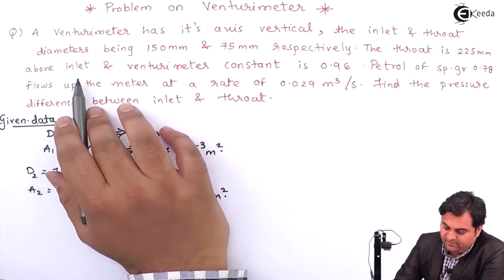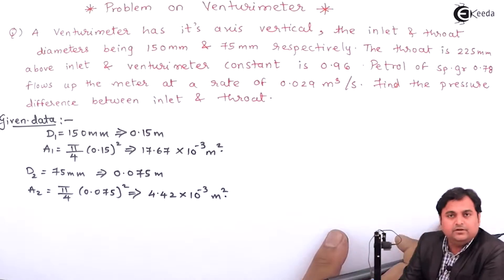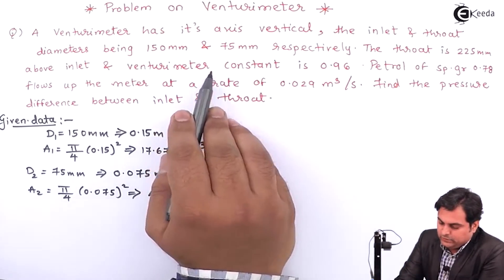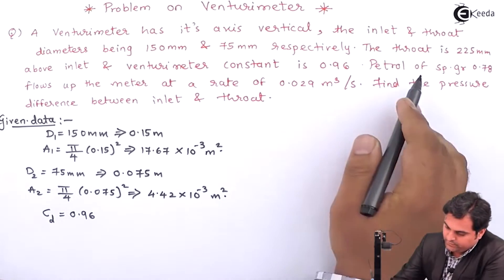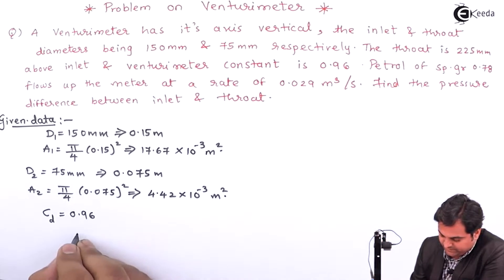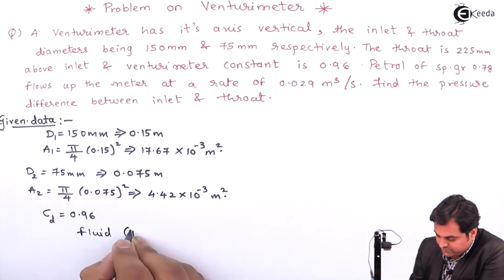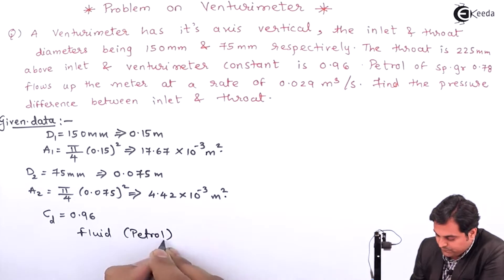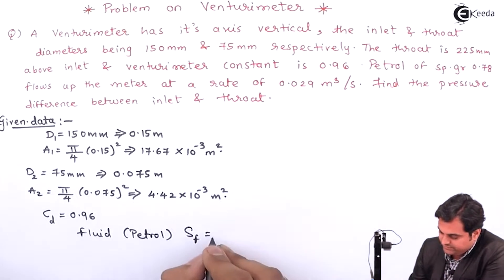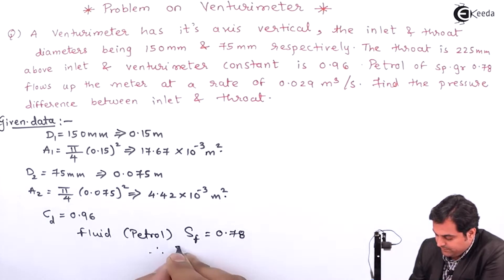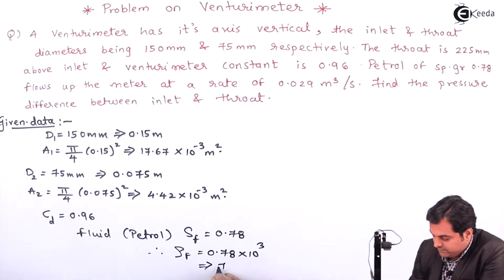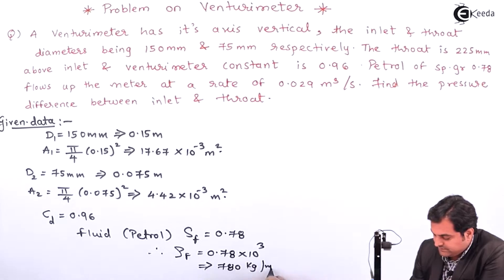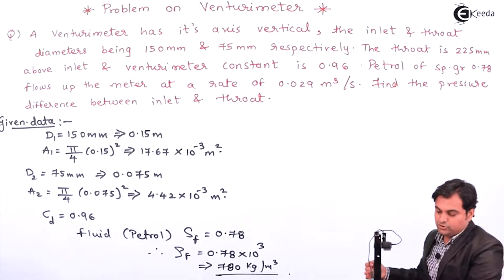The throat is 225mm above the inlet, that I'll explain on the diagram of the venturimeter. Next, venturimeter constant is 0.96, that is called coefficient of discharge CD. Petrol of specific gravity, so the fluid which is flowing is petrol, specific gravity is 0.78, so its density will be multiplied by 1000, that will give me 780 kg per meter cube as the density of petrol. Next, flows up the meter so the direction of flow is upward.